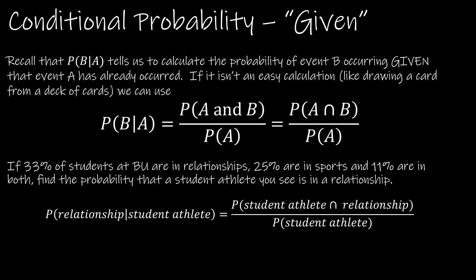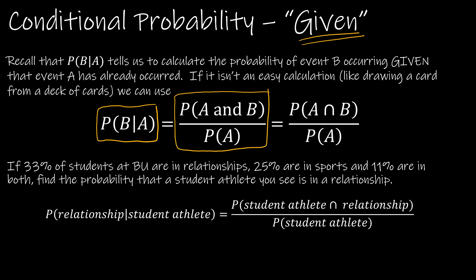Let's take a closer look at conditional probability. The probability of B given A is the probability of event B occurring given that A has already occurred. You might see this written as the probability of A and B divided by the probability of A, or written using intersection notation — P(A ∩ B) / P(A) — which also just means AND.